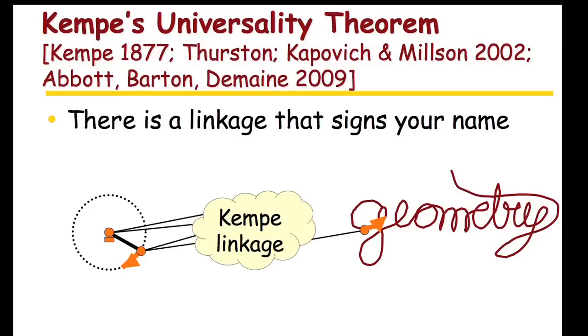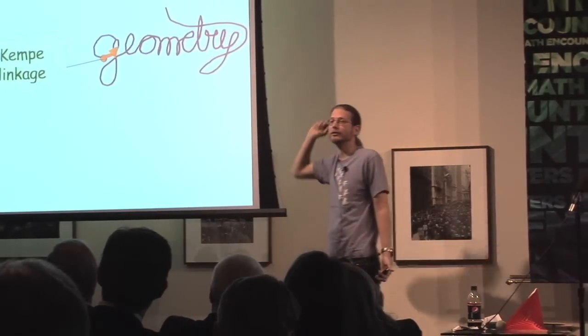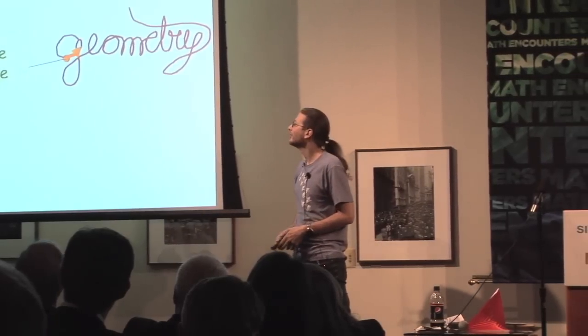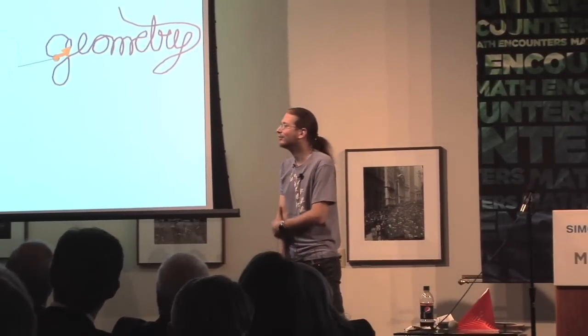So in fact, you can do much more. You can make a linkage, one of these mechanical devices, turn a circular crank, and trace out any smooth curve you want. You can sign your name with a very complicated linkage. It's fun. In some sense, an old result goes back to late 80s. Very cool.